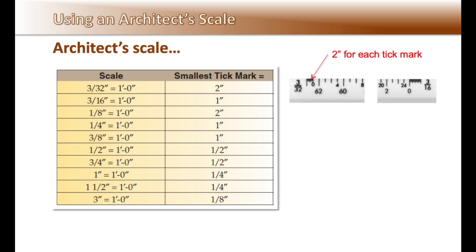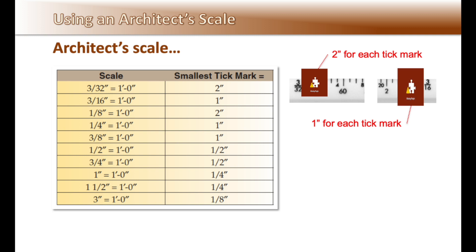Now back to understanding the tick marks on a scale. I refer to these as the smallest tick mark shown on a referenced scale. For instance, three thirty-seconds of an inch shows six tick marks, meaning it is showing every two inches in scale — this makes sense because it is a very small scale and not much information can be shown. Whereas the three-sixteenths scale has twelve tick marks, indicating the smallest tick mark as one inch, since it is twice as big as the three thirty-seconds scale.